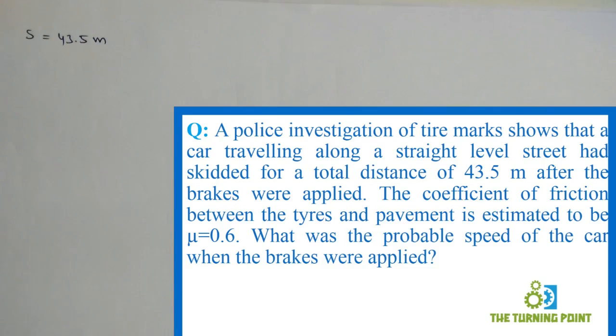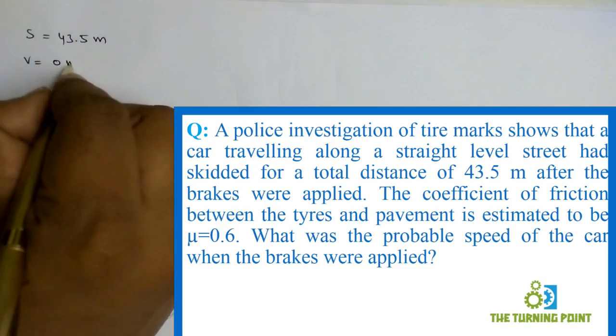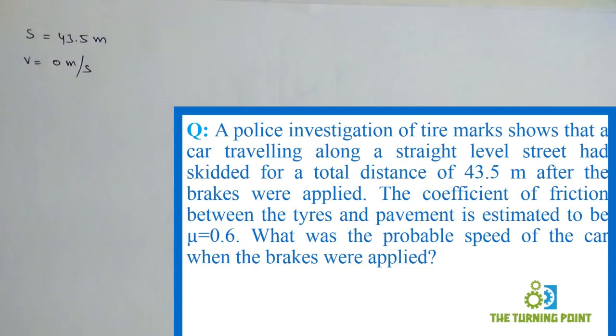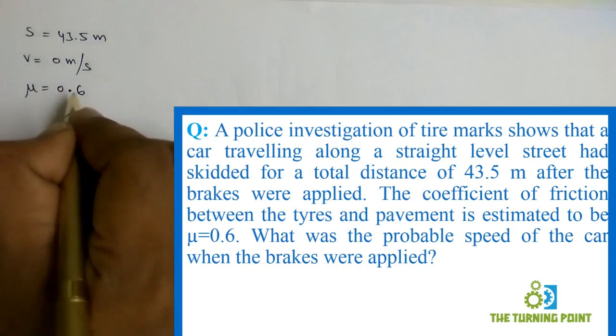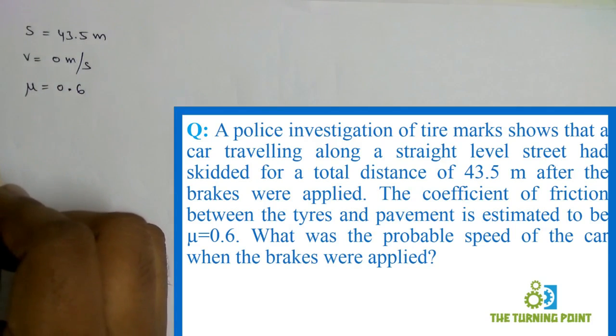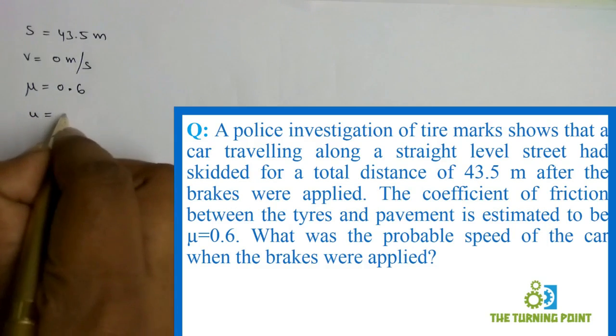After the brakes were applied, it will come to the state of rest, so final velocity is equal to 0 meter per second. The coefficient of friction between the tires and pavement is estimated to be μ = 0.6. What was the probable speed of the car when the brakes were applied? That means it is asked to calculate initial velocity.